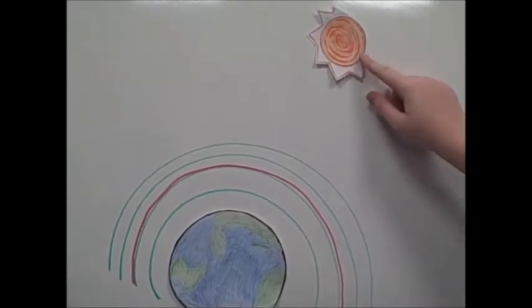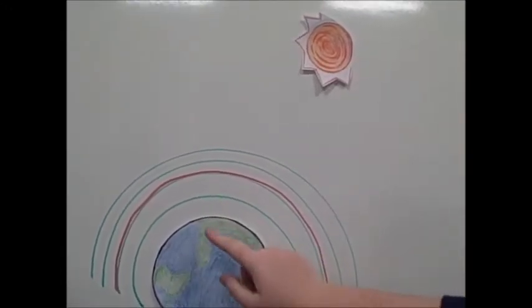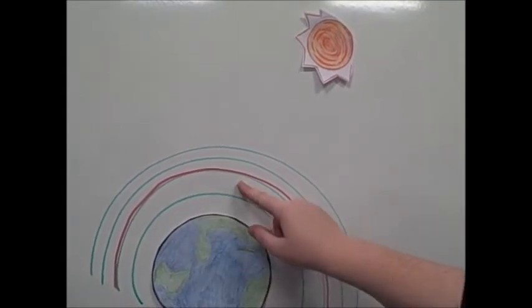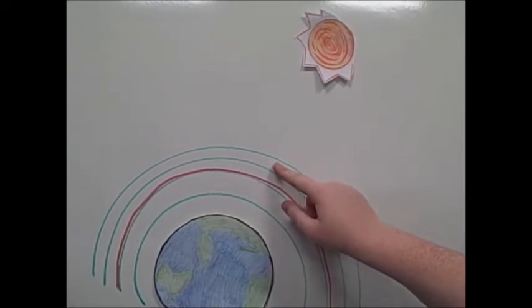So here we have the sun, a big ball of burning hydrogen gas, the earth, the troposphere, stratosphere, the ozone layer, the mesosphere and the thermosphere.